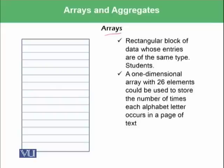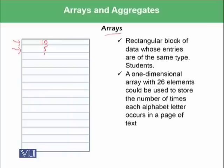A one-dimensional array with 26 elements could be used to store the number of times each alphabet letter occurs in a page or text. For example, one cell can store how many times the letter A has occurred in the page, another can store how many times the letter B has occurred in the text, and so on.